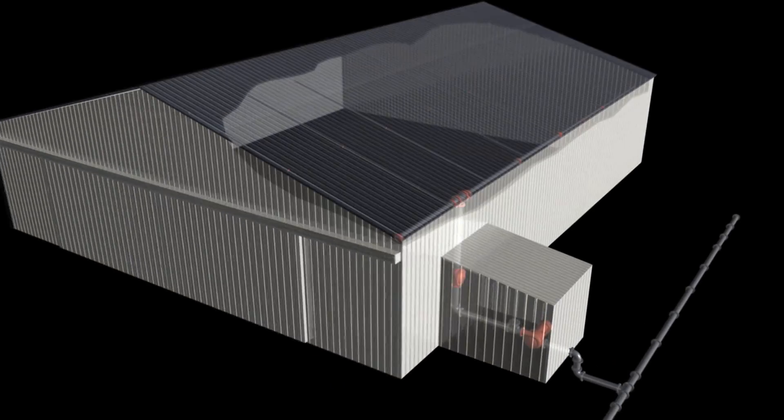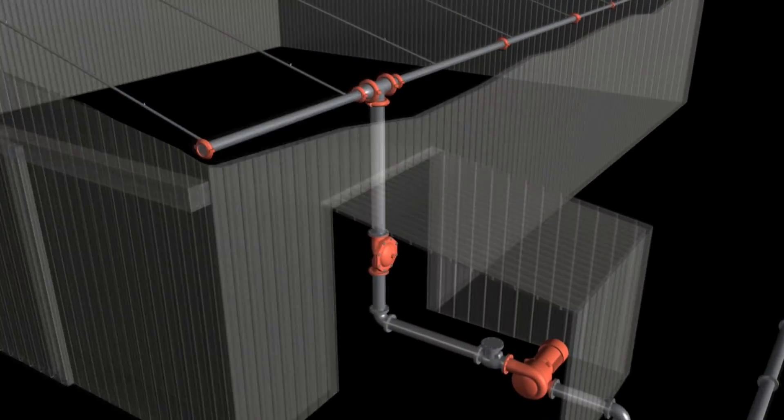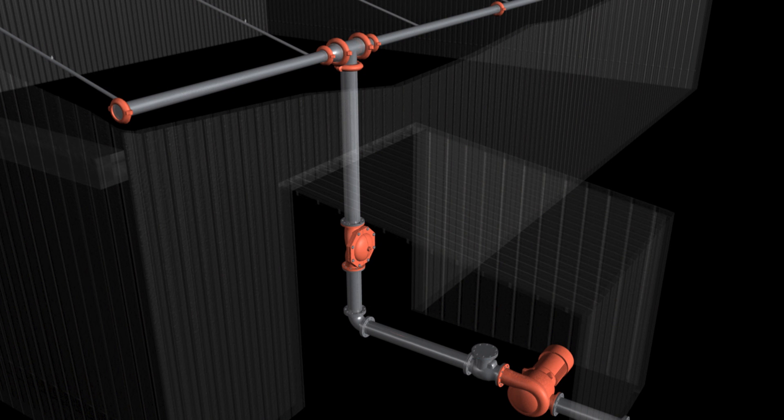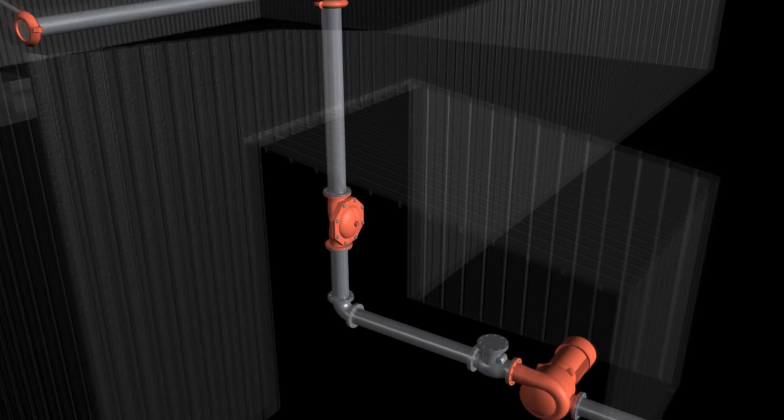In a large building, a deluge sprinkler system is sometimes required to supply water quickly and evenly throughout the building.